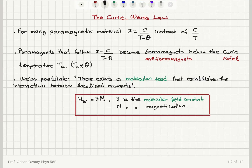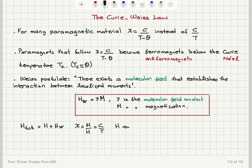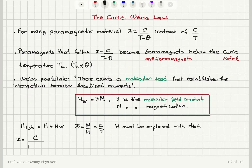With this postulate, Weiss said that the total magnetic field that a moment sees is the applied magnetic field H plus the Weiss molecular field. So when we say that susceptibility M divided by H has to be C over T, this H must be replaced with H total. Therefore, the susceptibility in Curie-Weiss law becomes C divided by T, where the denominator includes H plus molecular field constant gamma times magnetization.